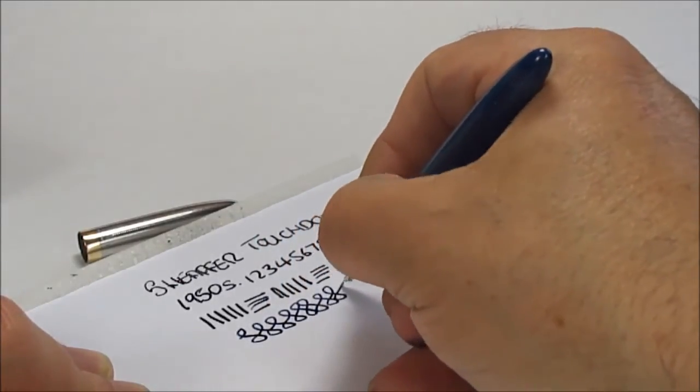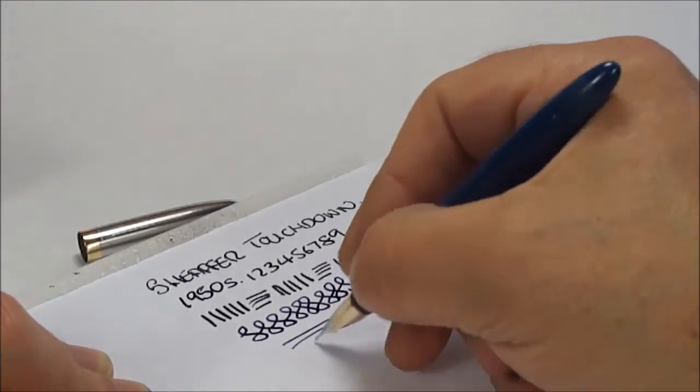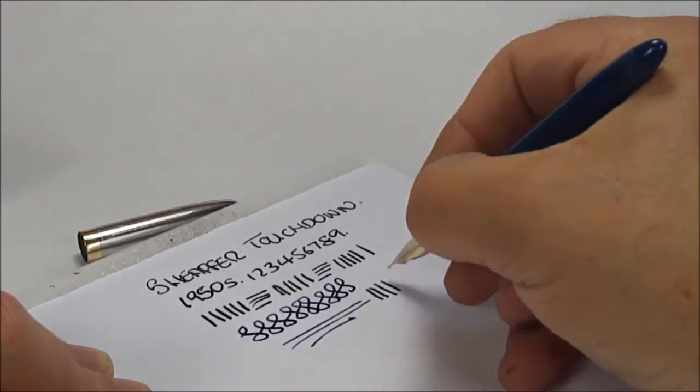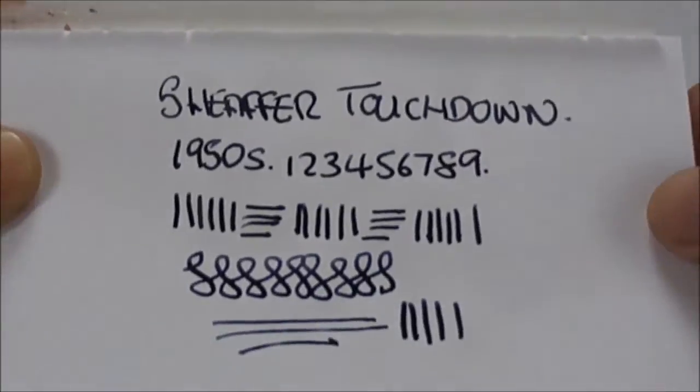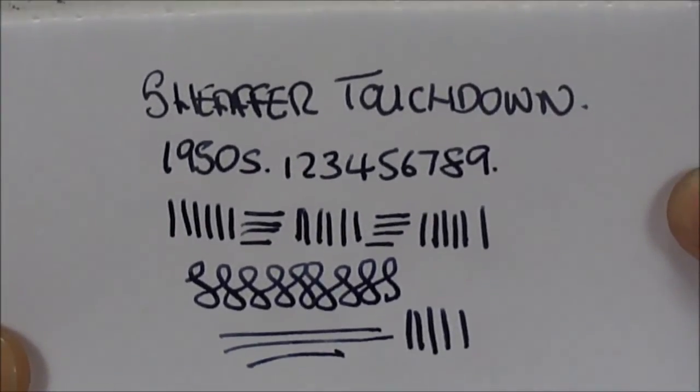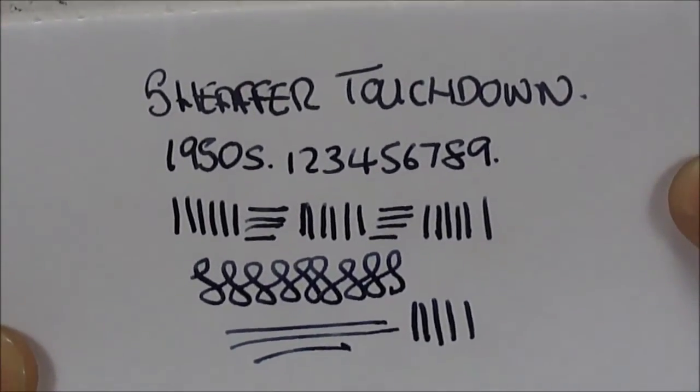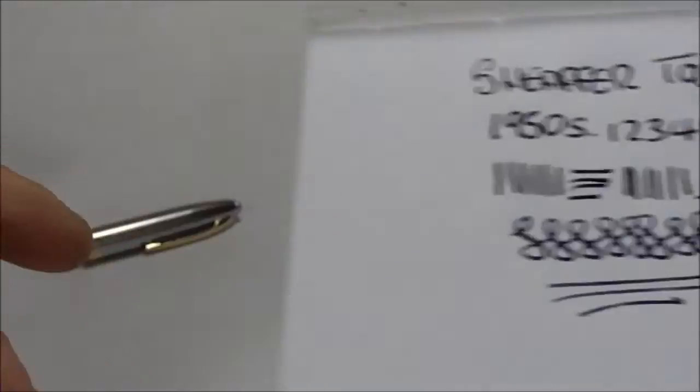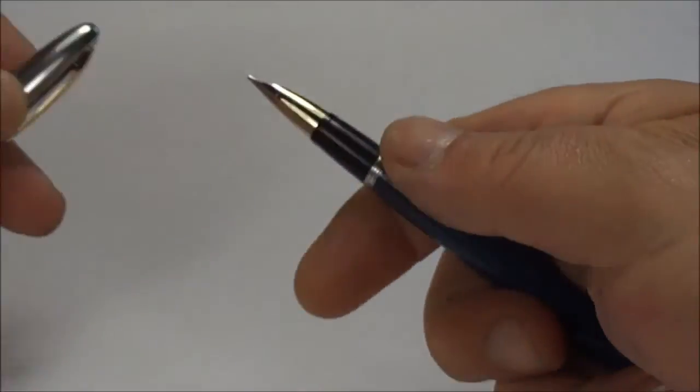nib is a broad nib and writing very very nicely. Very very smooth, I'm very impressed to be quite honest with you. Okay so we've got a lovely pen that's writing with a broad and a lovely wet line as well, very nice.